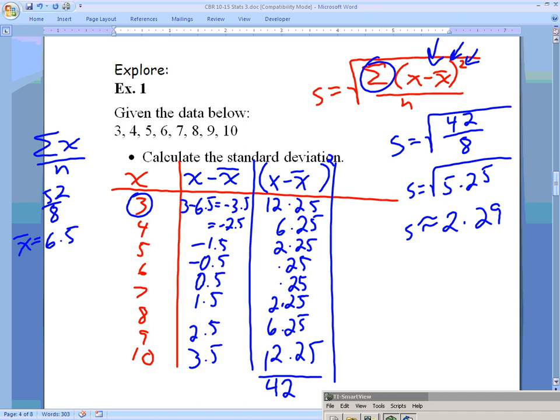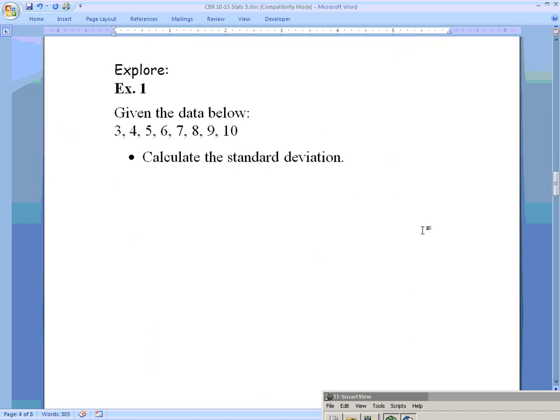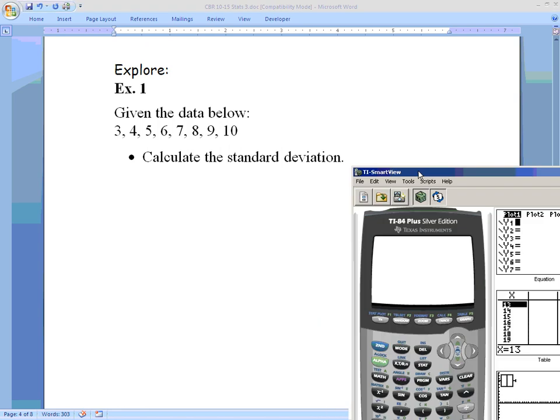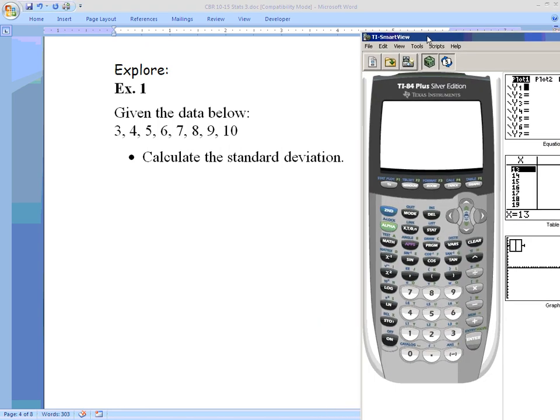Now I'm going to show you an easier way to get it using technology. We go on our calculator, I'm going to go to stat edit just like we would for when we were dealing with mean, median, mode. Got some numbers in here already so I'm going to clear those out and I'm going to put in these numbers: 3, 4, 5, 6, 7, 8, 9, and 10.